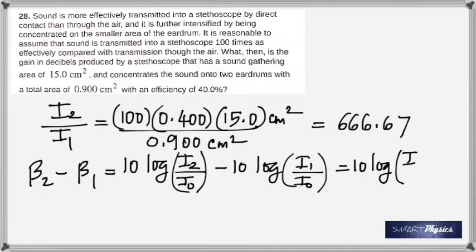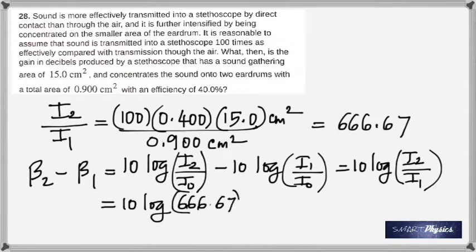So that would be 10 log I2 by I0. Remember that that is the intensity in decibels at the doctor's ears minus the intensity in decibels when it starts off from the patient's chest. But yet, log A minus log B is log A divided by B. So you have log A minus log B, which is written as log A divided by B. Of course 10 is common here. I2 by I1 we already got it as 666.67. So you just plug it in and you get 28.2 decibels.